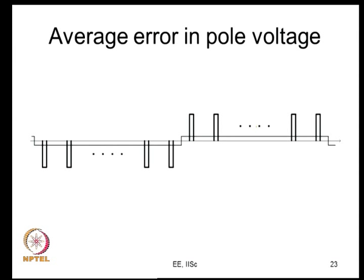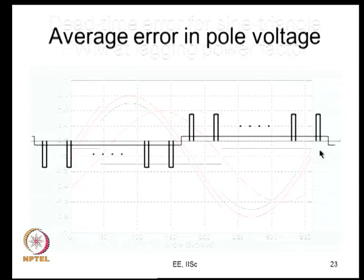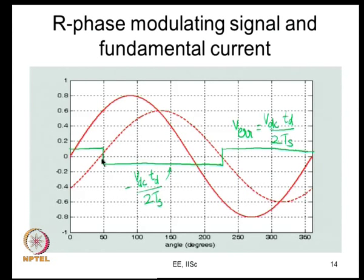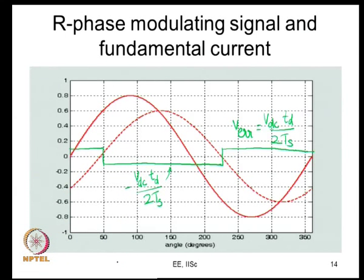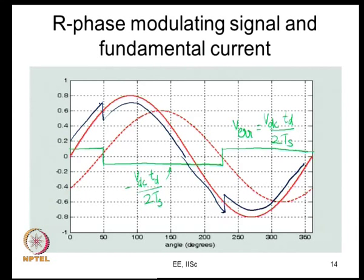This square wave gives a measure of how much damage is caused by dead time - the fundamental and low frequency components introduced at the inverter output on account of dead time. The actual pole voltage is supposed to be sinusoidal, but the actual pole voltage falls and rises with this error voltage added to it, distorting it from the ideal sinusoid.